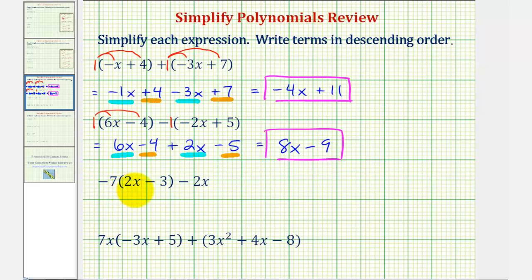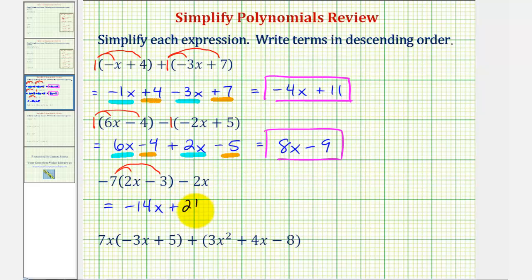Next we have negative seven times the quantity two x minus three, minus two x. We'll clear the parentheses by distributing negative seven. Negative seven times two x is negative fourteen x. Negative seven times negative three is positive twenty-one, or plus twenty-one. And we still have minus two x. So negative fourteen x minus two x would be negative sixteen x, and we still have plus twenty-one.